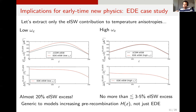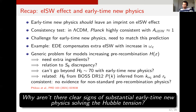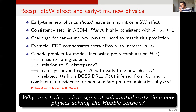This is not a problem only for early dark energy, but more generically for any model which increases the pre-recombination expansion rate. So in recap: early time new physics is expected to leave an imprint on the early ISW effect, which is however perfectly consistent with the Lambda CDM expectation. The amplitude is consistent with one, presenting an important challenge for early time new physics. In the bigger picture of the Hubble tension, this might also explain why it's been very challenging to get above H0 of about 70 or 71 with early time new physics alone.